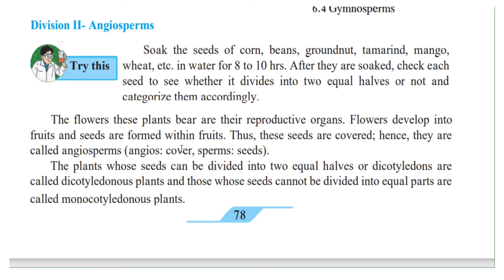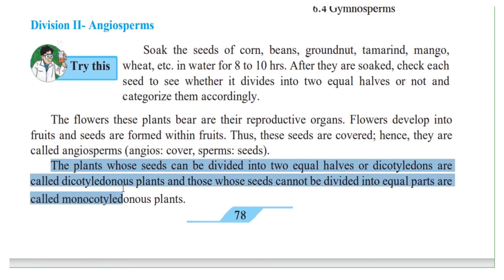Angios means cover and sperms means seeds. Plants whose seeds can be divided into two equal halves are called dicotyledonous plants. Those whose seeds cannot be divided into equal parts are called monocotyledonous plants — that is, they have just one part to the seed and you cannot divide it into two parts.